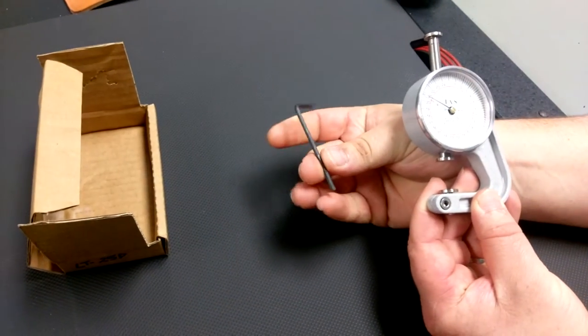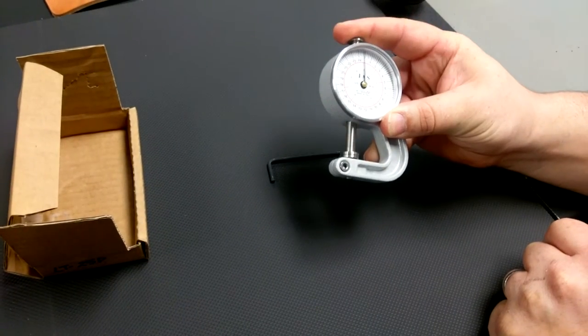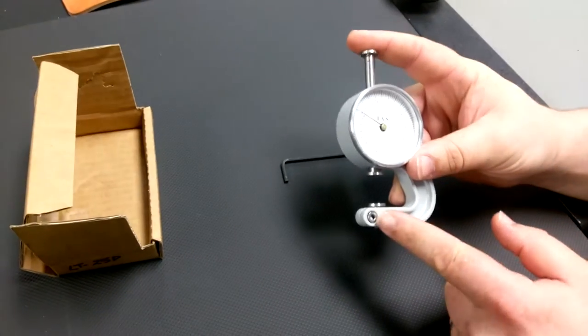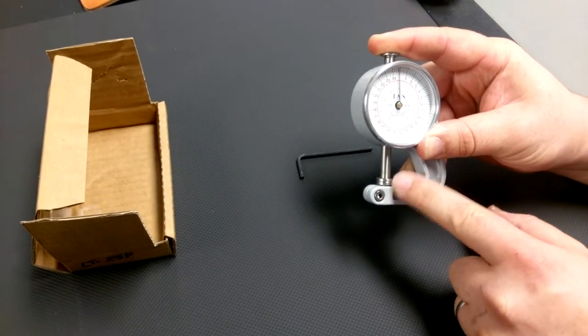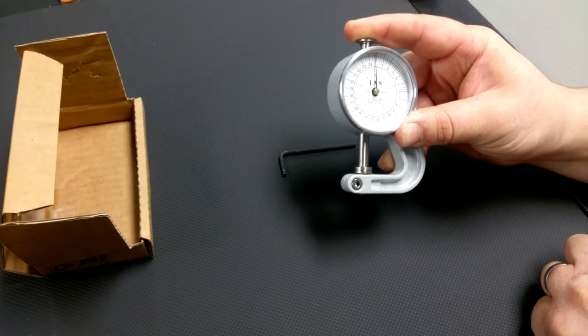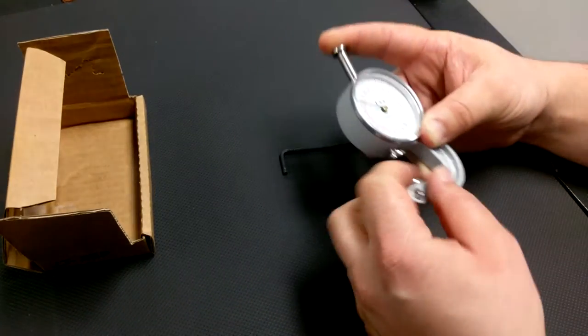In the box that was supplied with the gauge, you have an Allen wrench, and that is to adjust your lower anvil of the thickness gauge. Your zero point is where the anvil comes down and hits that lower bottom, and that should be exactly zero when you have nothing in there.